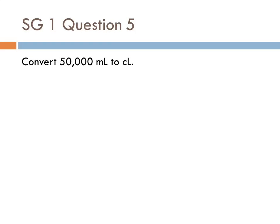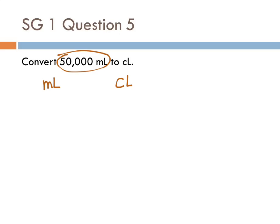Here we have an example of a metric conversion where we have two prefixes. Convert 50,000 milliliters to centiliters. When we look at this, we see that we just have the one number — that's what we're starting with — milliliters, and it says convert to centiliters. When we look at these units, the one we're starting with and the one we're ending up with, we see that they both have a prefix: one's milli and one's centi. There are two prefixes, so we need to have two steps.